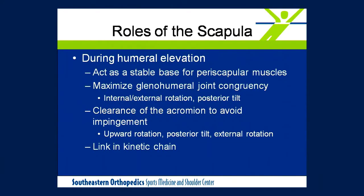The scapula plays a number of roles, particularly as the arm is being elevated. Number one, it's important to provide a stable base for the periscapular muscles. The rotator cuff requires a stable base for its anchor as it's stabilizing the glenohumeral joint. Also, in order for the glenohumeral joint to have maximum congruency as the arm is being elevated, the scapula must change its position — it must rotate externally and also posteriorly tilt.